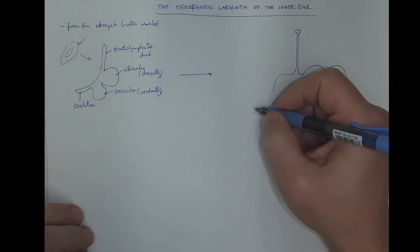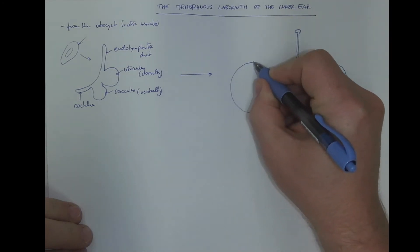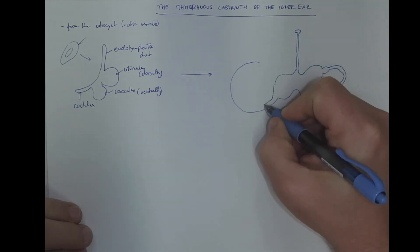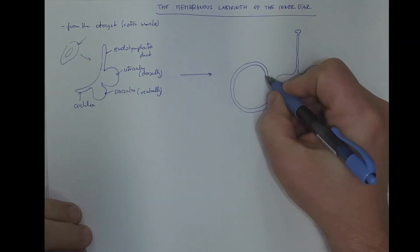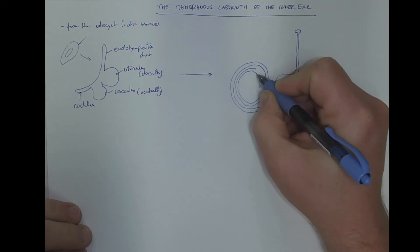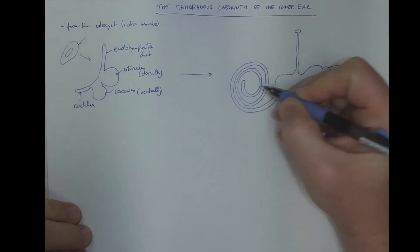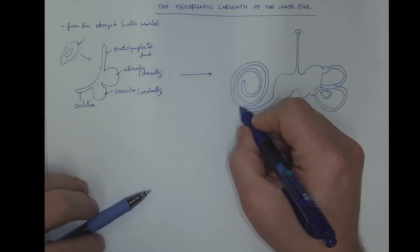It's approximately 2.25 turns. We got one turn, two turns, and three quarters. This would be the cochlea.